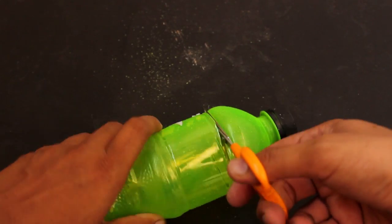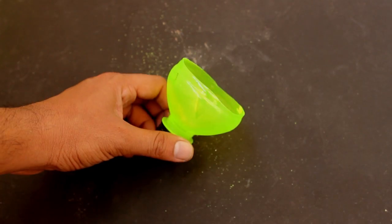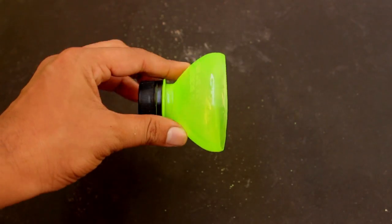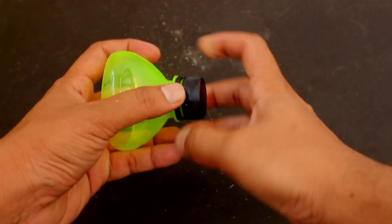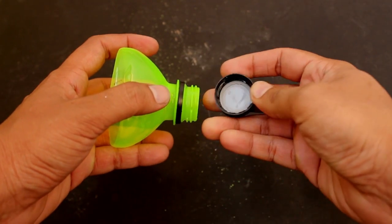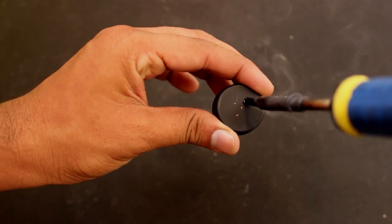Take the plastic bottle and cut the head portion. Trim the rough edges to give a good round look. Now remove the cap and make four holes to fit the four LED lights.